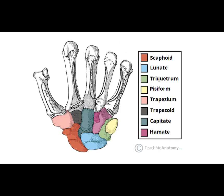For the distal carpal row, again starting on the radial side, we have the trapezium in pink, followed by the trapezoid in gray, then the capitate in green, and finally the hamate in a purplish color. And there you have the bones of the hand. That concludes our tour of the bones of the upper extremity.